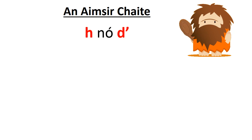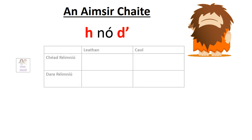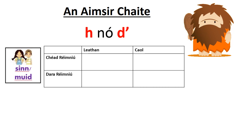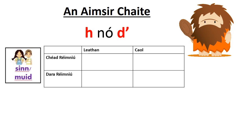The only other big change in the aimsir chaite is when we're working with 'sinn' and 'muid'. When we're working with 'we', we put on a different ending. That ending depends on whether the verb is leathan (broad) or caol (narrow), and whether it's in our first group — single syllable verbs — or our second group, the two-syllable verbs.